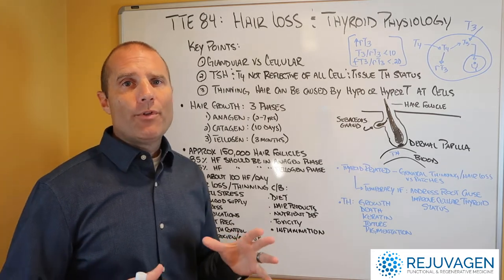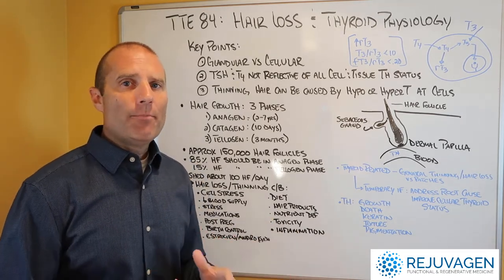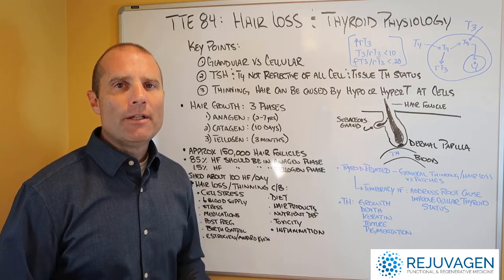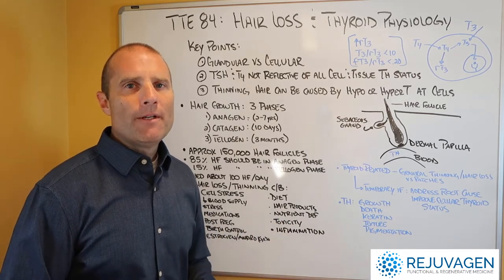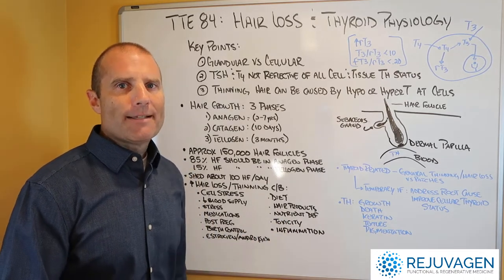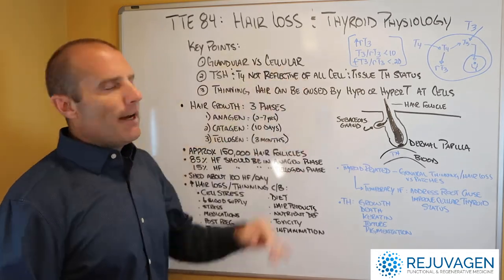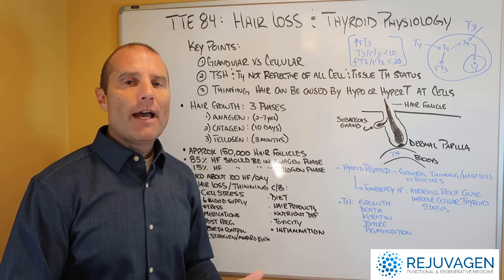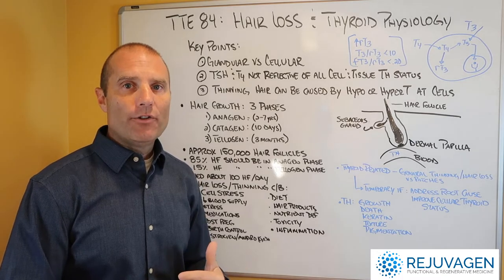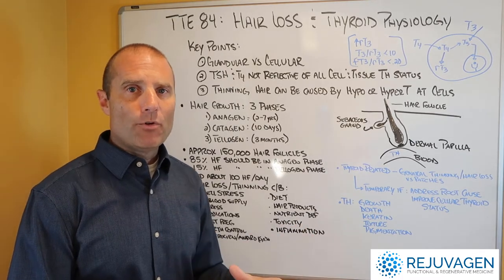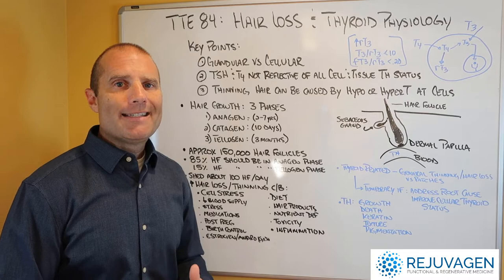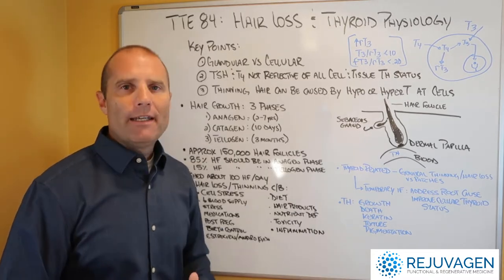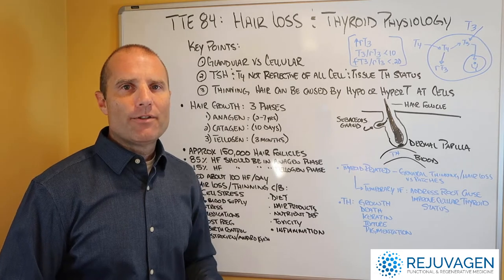The primary cause of both glandular hyperthyroidism and hypothyroidism is typically an autoimmune condition, either Graves or Hashimoto's. Then we also have this process called cellular thyroid dysfunction, where you have cellular hyperthyroidism, which is too much thyroid hormone reaching the cells, and cellular hypothyroidism, where there's too little T3 getting to the nuclear receptors in the cells.